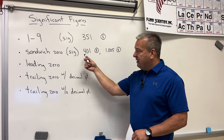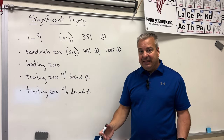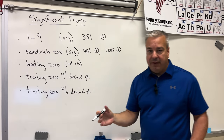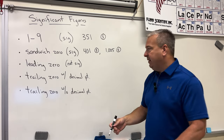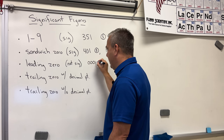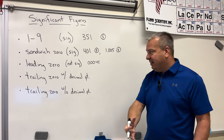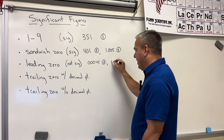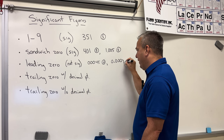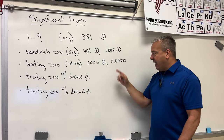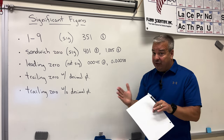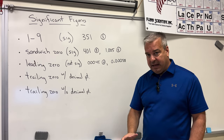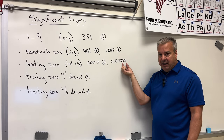Digits one through nine count, sandwiched zeros count, and then we get to leading zeros. Leading zeros are not significant, and it doesn't matter if they come before or after the decimal point. I think most people understand that zeros before the decimal point are kind of meaningless. But if you have a number like 0.00058, some people will say these zeros are important and significant — but they are not significant. They are not part of the measurement. The measurement is way down here with the five and the eight.